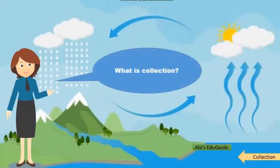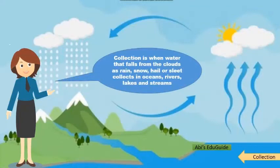What is collection? Collection is when water that falls from the clouds as rain, snow, hail, or sleet collects in oceans, rivers, lakes, and streams.